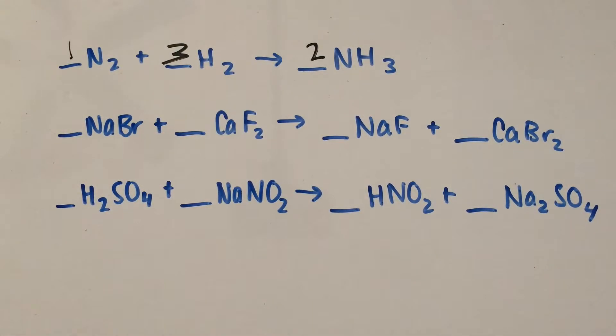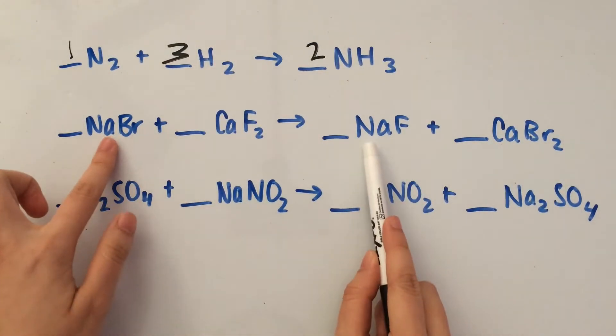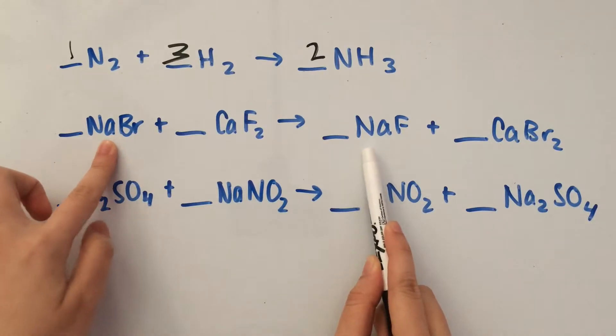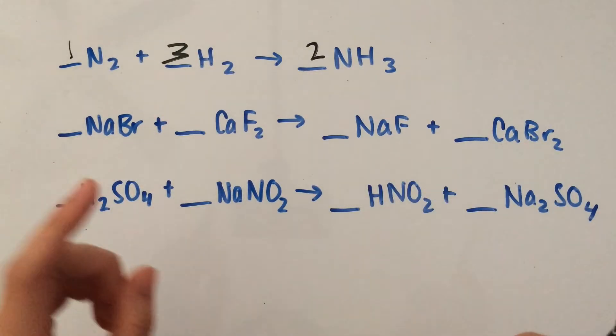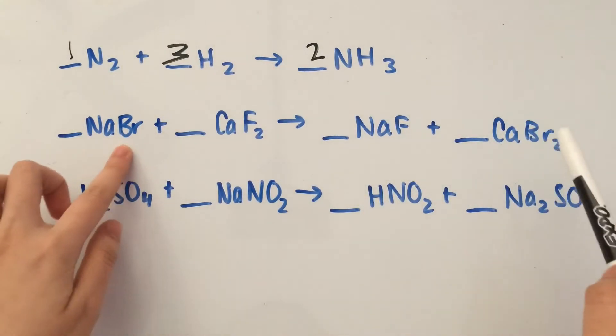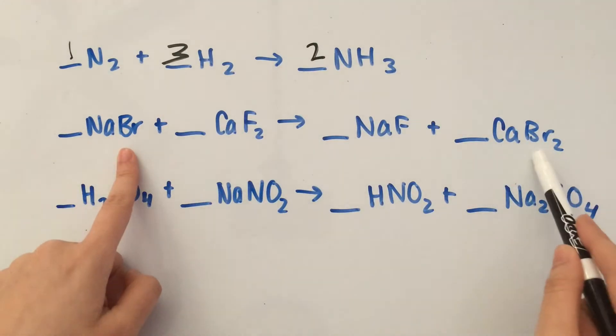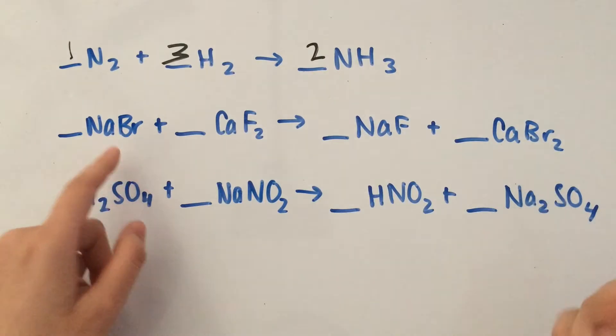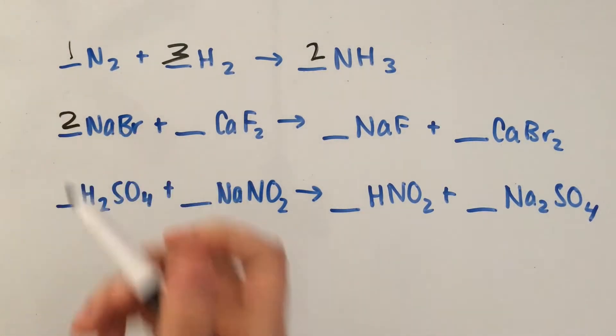The next one is a little bit harder. We have the same number of sodiums, so I'm going to leave that alone. The next element is Br. Br is one over here but two over here, so we need to put a two in front.